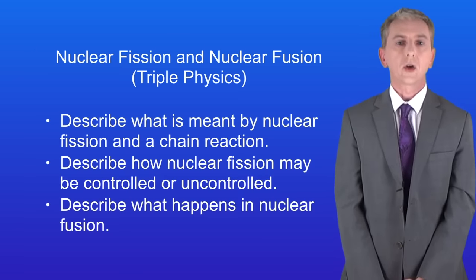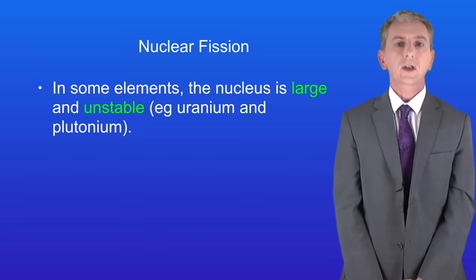So we're going to start by looking at nuclear fission. The first key idea you need to understand is that in some elements the nucleus is large and unstable, and good examples of these are uranium and plutonium.